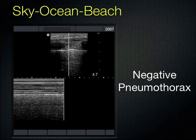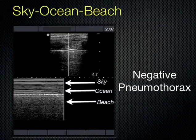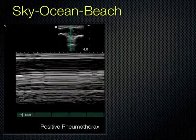By contrast: an upper picture shows an A-line — which could be normal or pneumothorax — and when you put M-mode through it, you have no beach. This is a pneumothorax, which looks like a barcode.